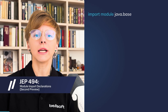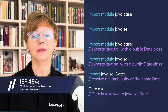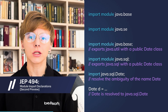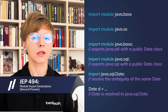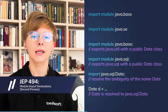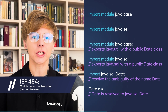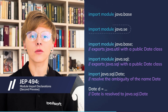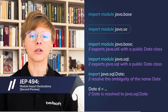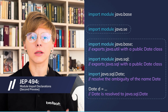JEP 494 introduces a second preview of module import declarations. Thanks to this feature, developers can implicitly import all module packages by simply importing the module. It reduces the noise of multiple on-demand imports and facilitates coding in Java for beginners. Two main changes: allow importing the whole Java SE API when importing the Java SE module, and allow on-demand import declarations to shadow module import declarations.